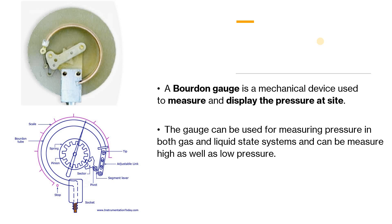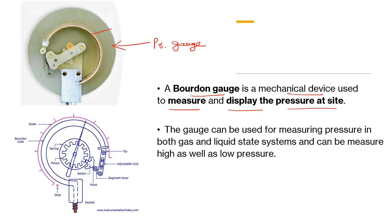The Bourdon pressure gauge is a mechanical device — an instrument — mainly used to measure pressure and display it at the site. If you look at this picture, this is the internal view of the pressure gauge. It is very simple; there is no complexity within the dial. It is just a mechanism that shows you the pressure mechanically, locally.